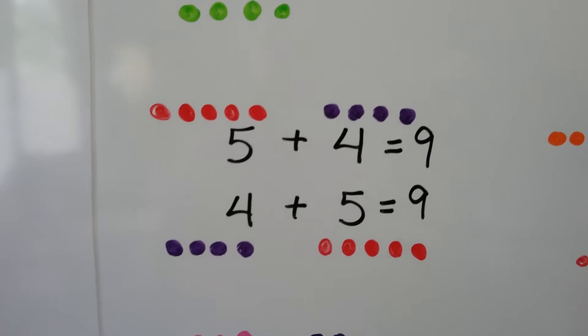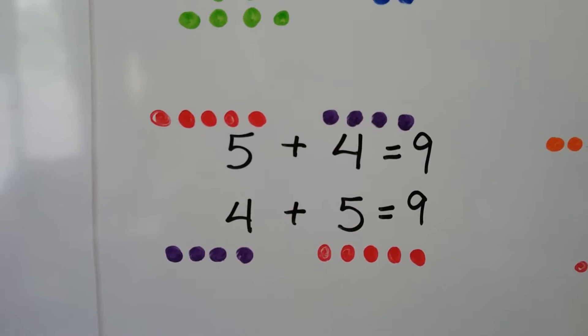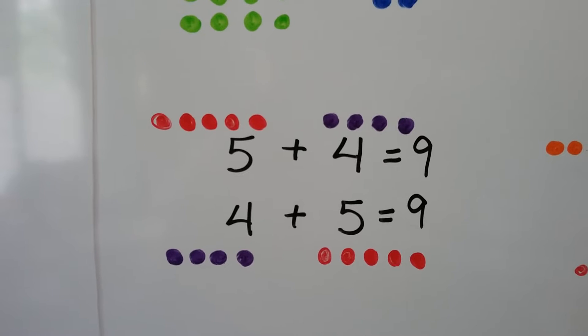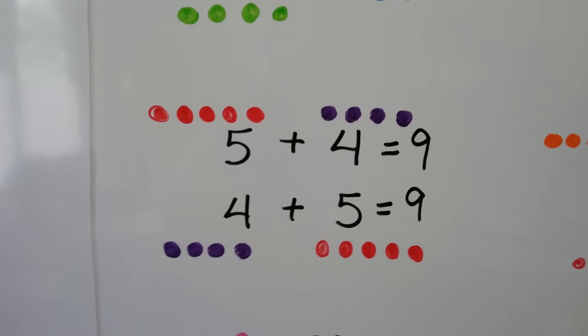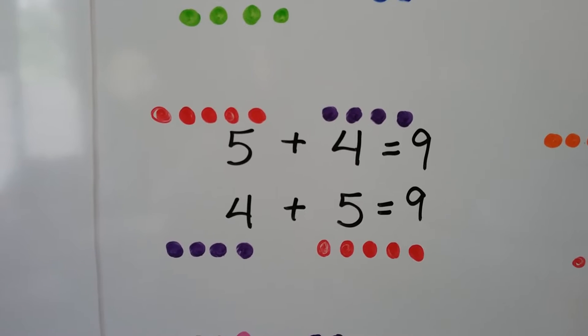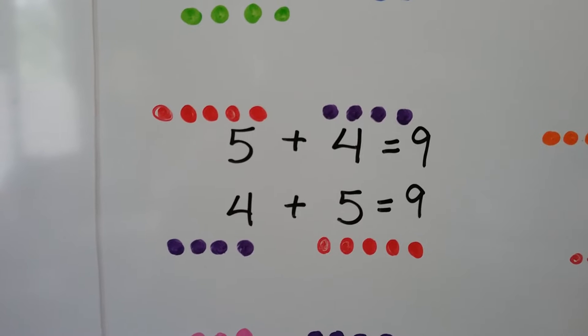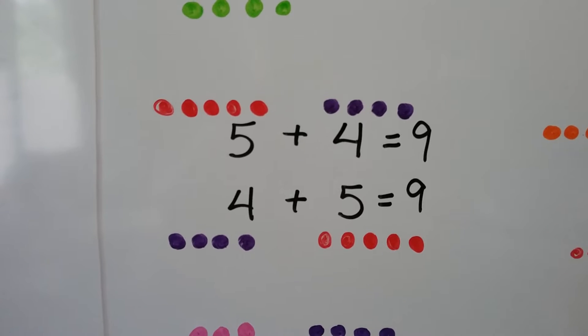Here we have five plus four equals nine, and four plus five equals nine. It doesn't matter which order we add them — it's still going to equal nine.